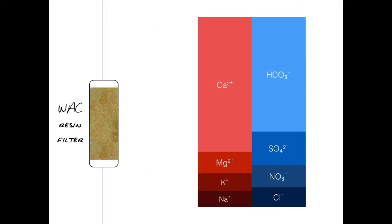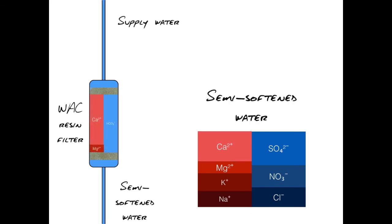The weak acid cation water softener runs the water through a resin that filters out the bicarbonate and a corresponding amount of calcium and magnesium, taking the ingredients of lime scale out of our supply water.